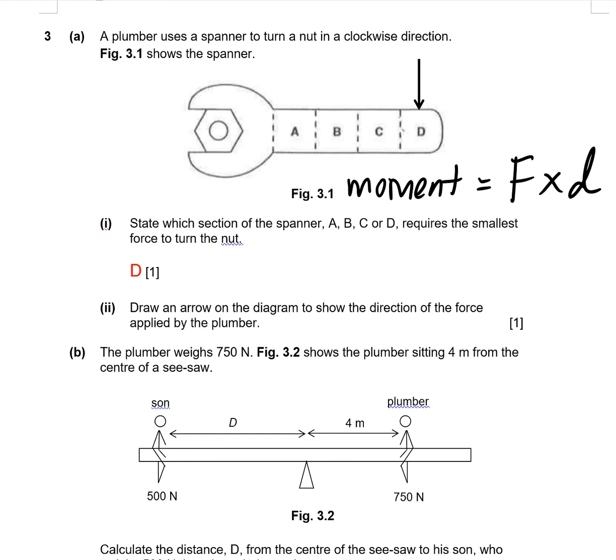This is a spanner and you want to turn the nut. So this is the nut over here. You want to turn the nut in a clockwise manner. So which section will require the smallest force?